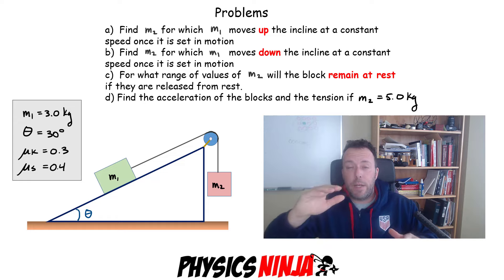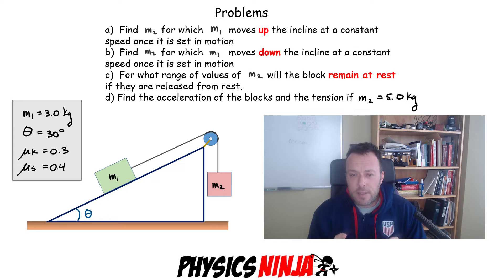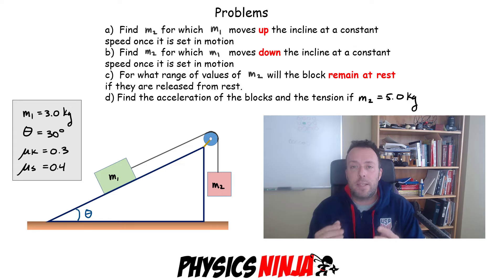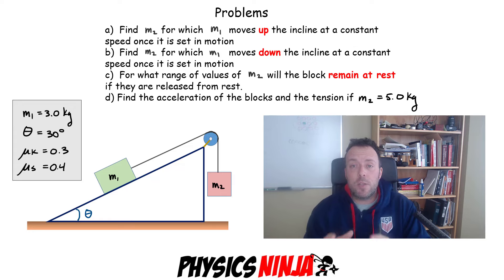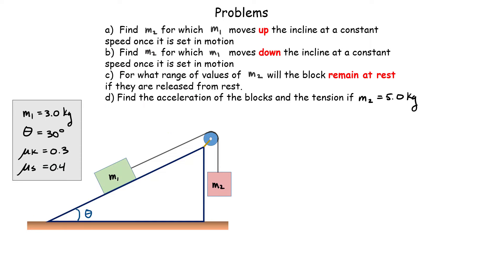The first three problems deal with motion at constant speed — either up the incline or down the incline. Question C asks what range of values of hanging block m2 keeps the system from moving at all — a Newton's first law problem where both blocks are at rest. In the fourth case, I'm given the mass of m2 and want to find the acceleration and tension where there is friction between block m1 and the incline.